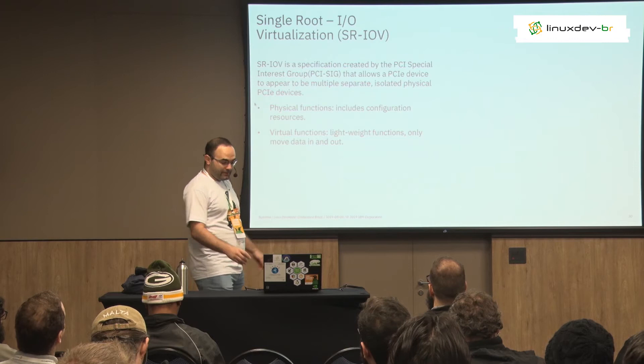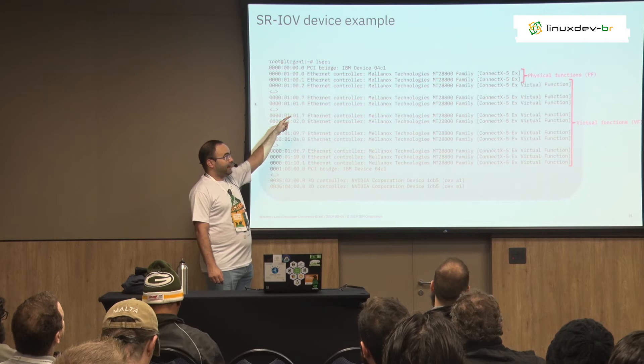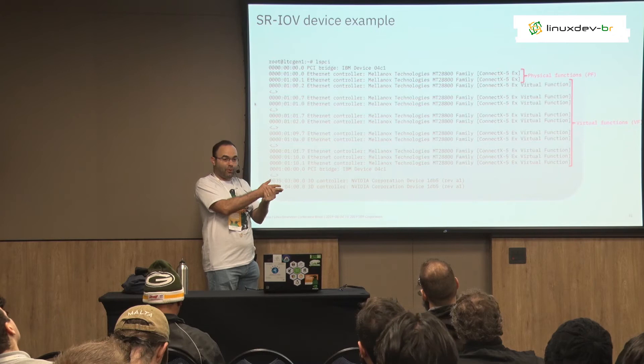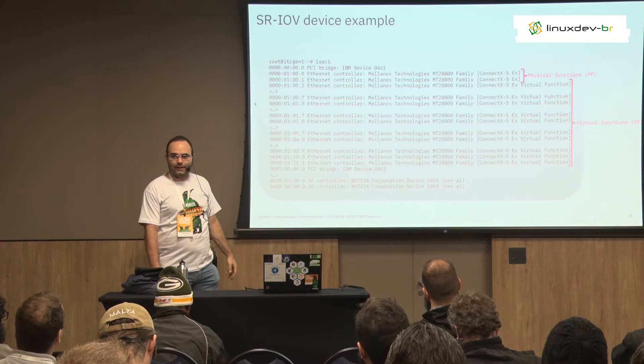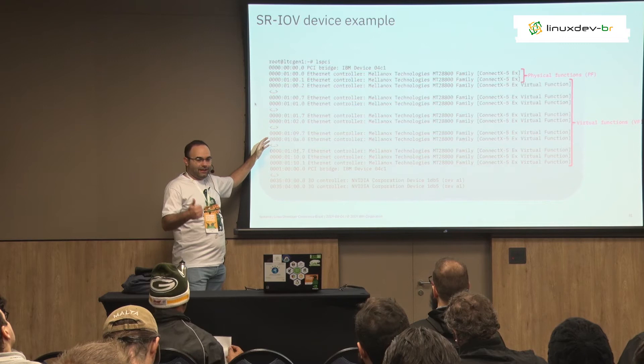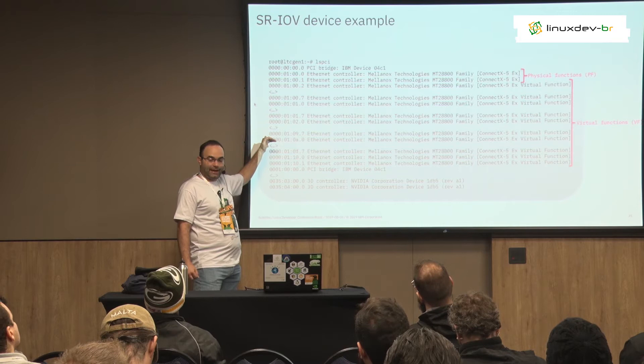Here's an example from a Power machine at IBM with a Mellanox ConnectX-5 network card that supports SR-IOV. You have what we call physical functions — the actual physical ports on the device — and you can virtualize them into many virtual functions, about 128 in this case. That means we can pass that same network card to more than 100 guests, either different guests or the same guest. Each individual virtual function can be passed to a guest with its own I/O and memory groups, controlled by the hardware itself.